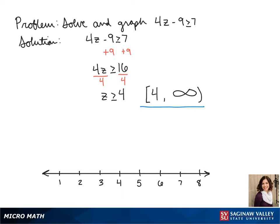Now to graph z is greater than or equal to 4. We put our point on 4. This is a closed dot since 4 is included. Then our line goes to the right to show that it's anything greater than 4.